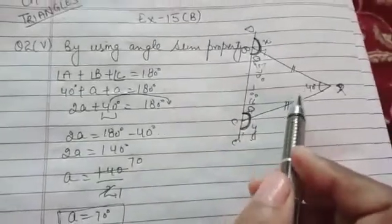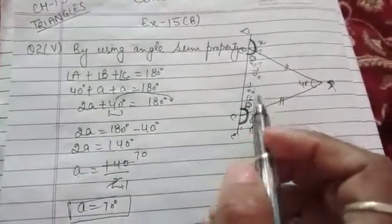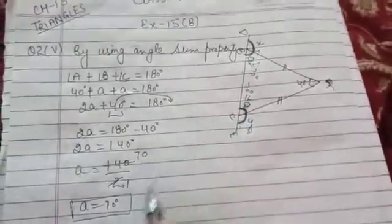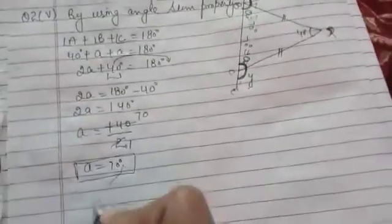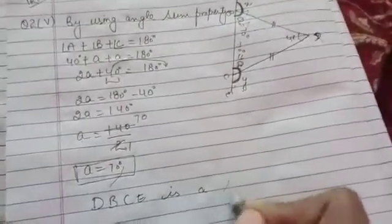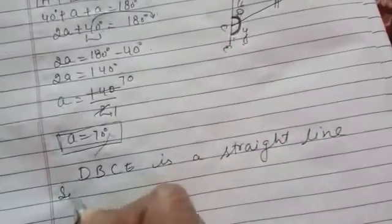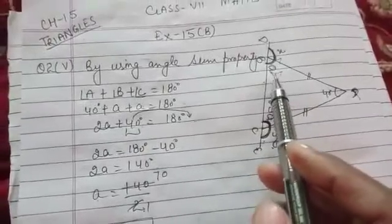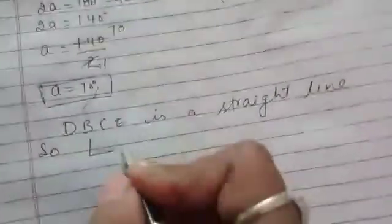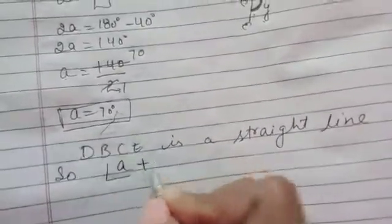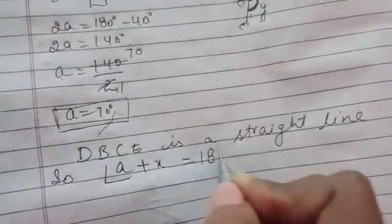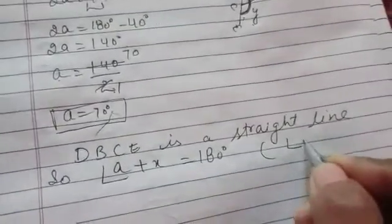So you can write DBCA is a straight line. So angle a + x = 180° - this is a linear pair.